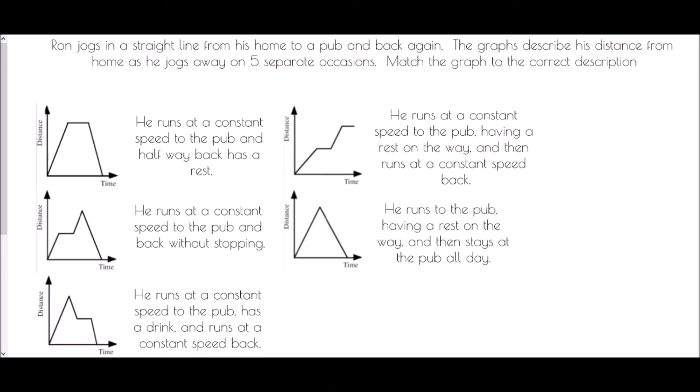We're going to start with a little matching activity, trying to match together a graph with the correct description of that graph. We're going to begin with Ron, who jogs in a straight line from his home to a pub and back again. The graphs describe his distance from home as he jogs away on five separate occasions. Match the graph to the correct description.